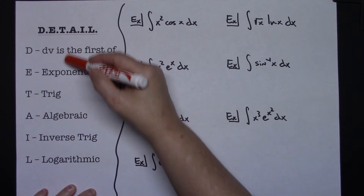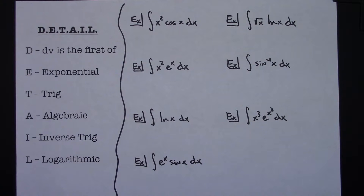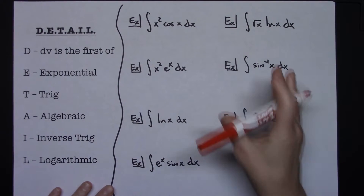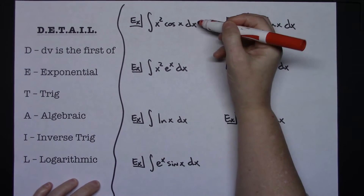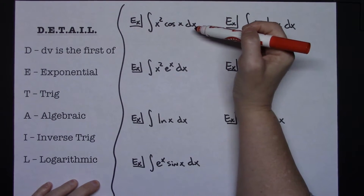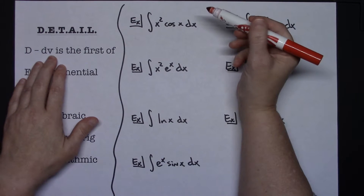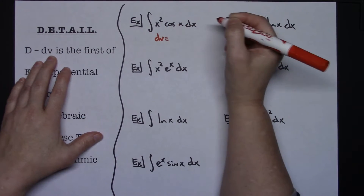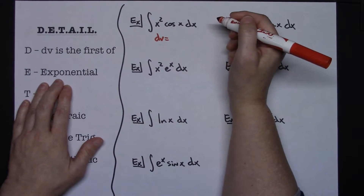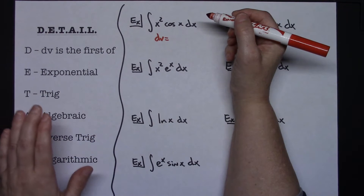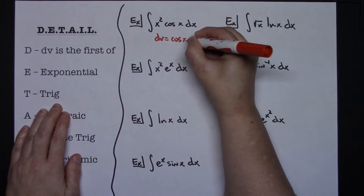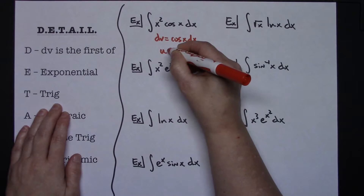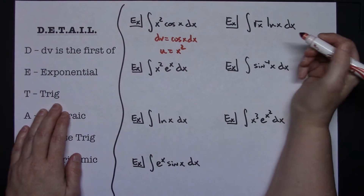I'll do some examples using the DETAIL acronym. In the first example, integrating x squared cosine x dx. DV is chosen first, so I go down the list looking for an exponential function — none. Next, trig function — yes, I have cosine. So I let DV equal cosine x dx, and then U must be everything left, which is x squared.